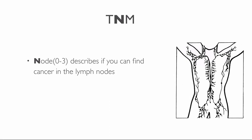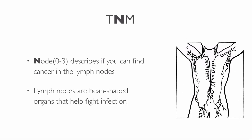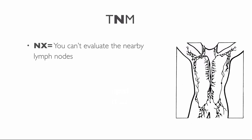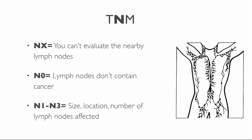Node — N: the letter N plus a number zero to three describes whether cancer can be found in the lymph nodes, and may also describe how many lymph nodes contain cancer. Lymph nodes are tiny bean-shaped organs that help fight infection. NX means you can't evaluate the nearby lymph nodes. N0 means nearby lymph nodes do not contain cancer. Numbers N1 to N3 describe the size, location, or number of lymph nodes affected. The higher the N number, the greater the cancer spread to nearby lymph nodes.